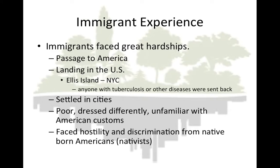Immigrants in the late 19th century usually faced great hardships, beginning with their passage to America. They traveled in steerage — an open room below the waterline — often with their life's belongings in a single bag. On a clear day, they assembled on the ship's deck for sunshine and fresh air. Most first arrived in New York City, where they were processed at the vast government center on Ellis Island in New York Harbor. Those with tuberculosis or other diseases were sent back. The new immigrants either stayed in New York City or took trains to join relatives elsewhere. Most settled in cities, were usually poor, dressed differently, and were very unfamiliar with American customs. They moved into crowded tenement buildings and worked unskilled jobs for long hours at low pay, often facing hostility and discrimination from native-born Americans and even from other immigrant groups.